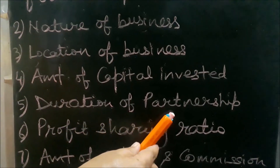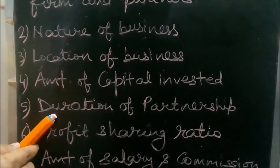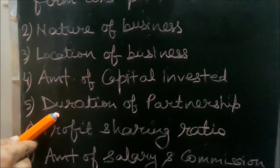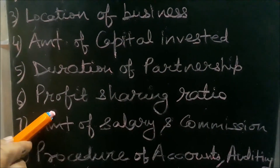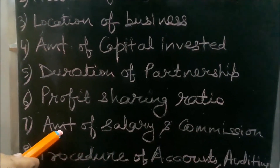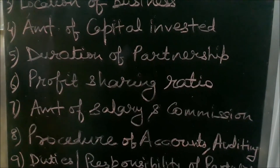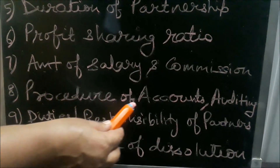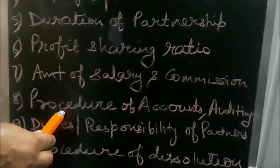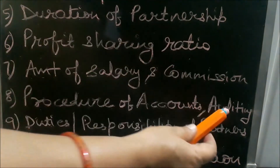Fifth is the duration of partnership — whether it is partnership at will or particular partnership, and if particular, what the duration is. Sixth is the profit sharing ratio of the partners. Seventh is the amount of salary and commission — if partners are to be given any salary or commission, that is specified. Eighth is the procedure of preparation of accounts and auditing — whether single entry or double entry system is used, and how auditing will be conducted.